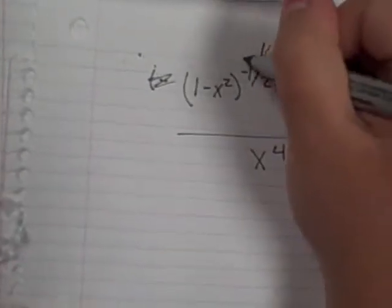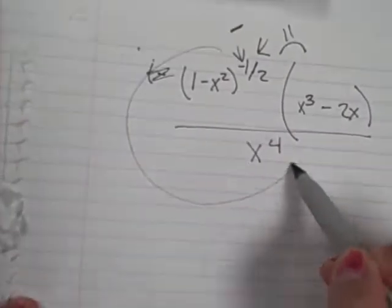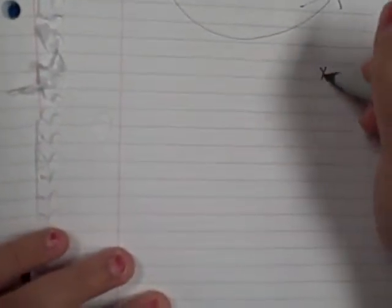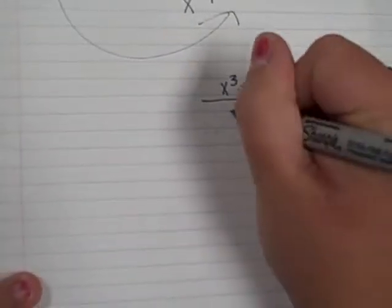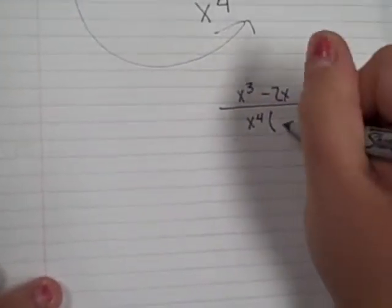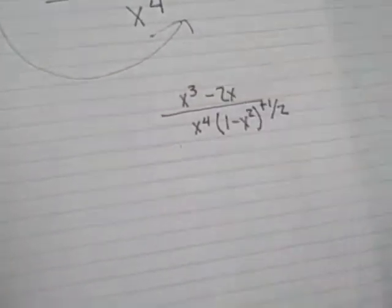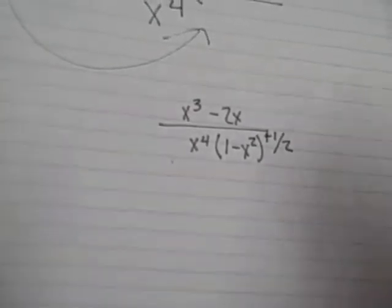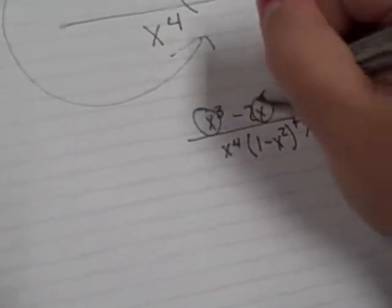So because it's a negative, you bring all of this and bring it down to the bottom. So on top you have x cubed minus 2x, divided by x to the fourth times 1 minus x squared to the positive one half. So this is somewhat of your answer, but we're not finished yet. All of these have the x, so you can take an x out.